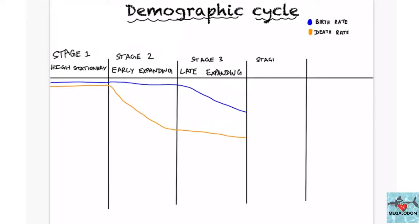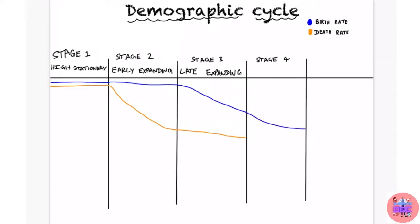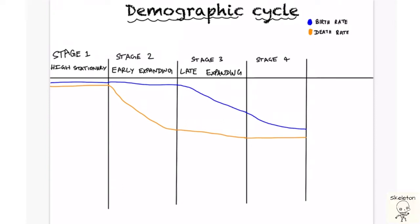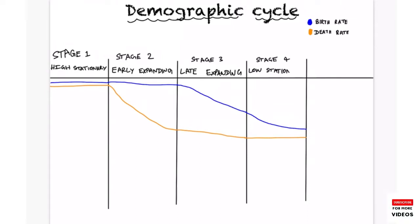In stage four, the birth rate decreases further and reaches an almost plateau or stationary state. The death rate, which was already low, also becomes stationary. Since both the birth rate and death rate are at a stationary level and both are at the lower end, stage four is called the low stationary stage.